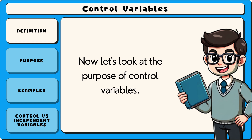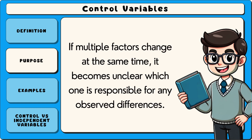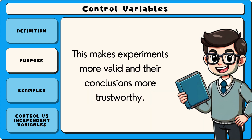The main purpose of control variables is to maintain consistency and accuracy in an experiment. If multiple factors change at the same time, it becomes unclear which one is responsible for any observed differences. By holding certain conditions steady, researchers can confidently attribute changes in the dependent variable to the independent variable, rather than outside influences. This makes experiments more valid and their conclusions more trustworthy.